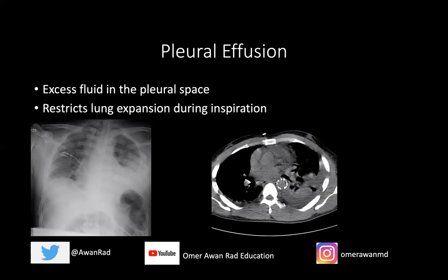Typically you'll have decreased breath sounds on the side of the effusion, and it'll be dull to percussion on physical exam. If you take a look at this chest x-ray, we'll start with the right lung, which is the more normal side. There's a nice acute sharp angle at the costophrenic angle because there's no fluid — this is normal. On the left side, we have blunting of the costophrenic angle. We don't see that sharp acute angle between the diaphragm and the lung because there's fluid there — a left pleural effusion with blunting of the costophrenic angle.